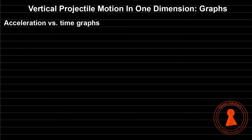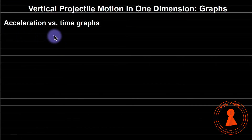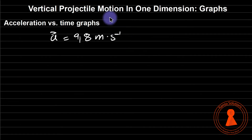Today we are looking at acceleration versus time. This is going to be the shortest topic. Remember, our acceleration is a vector which is 9.8 meters per second squared downwards.